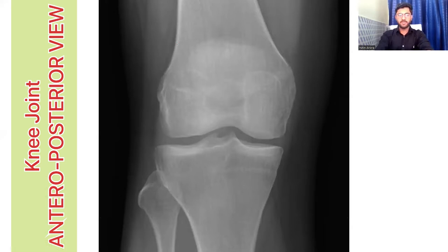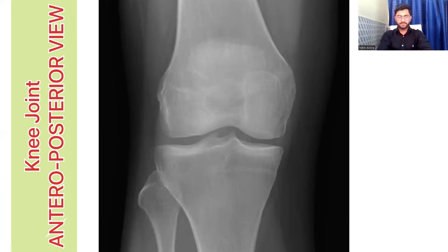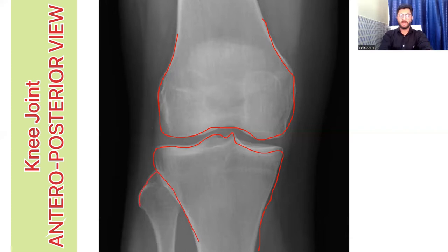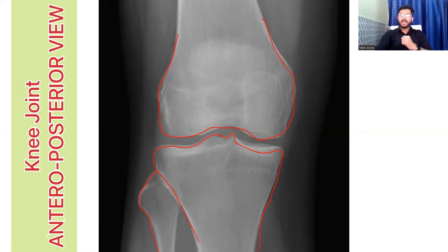So now in this AP view, what you can see is the femur bone on the top. Three bones are clearly visible here. One is the femur — this complete bone you see here is the lower part of femur, the distal part of femur. This bone here is the tibia — the proximal part of tibia. And this is what we call the fibula, the lateral bone of the knee joint. The knee joint is composed of femur, tibia and fibula.